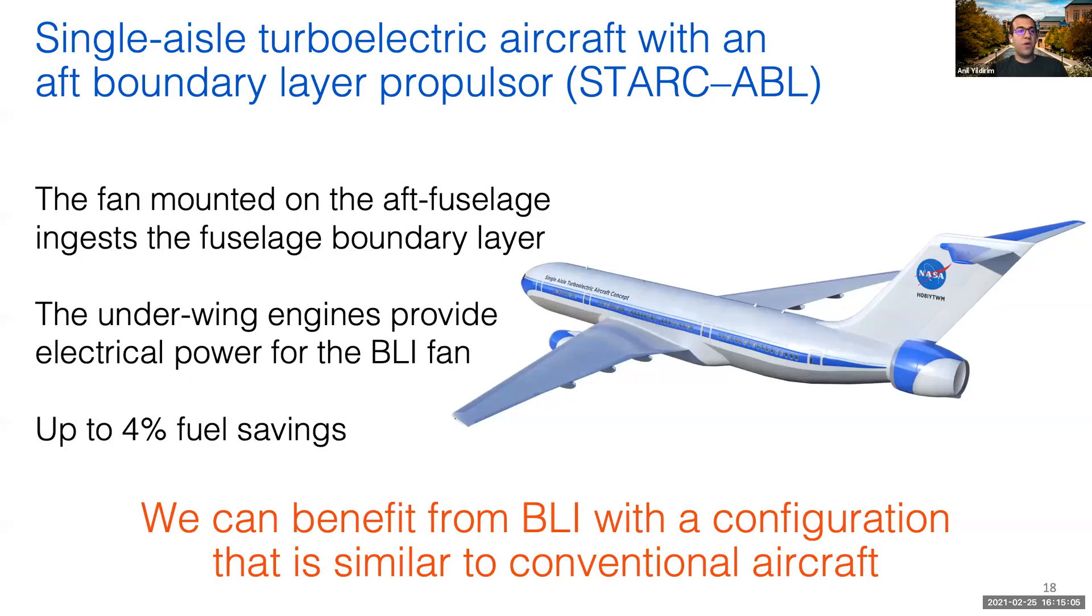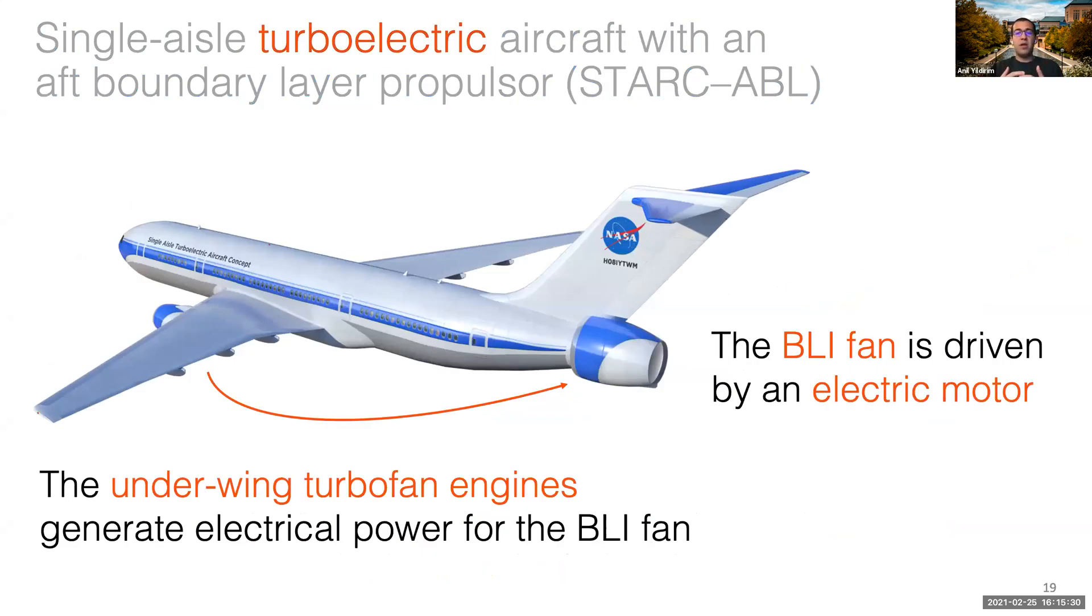That's why we've been focusing on the STARC-ABL concept developed by NASA. As you can see, it is very similar to a conventional aircraft that you would see in airports today, except for the fan on the rear fuselage. The STARC-ABL concept uses this fan to ingest the boundary layer generated by the fuselage to obtain better aeropropulsive performance. To explain how the BLI system works here, this configuration has two traditional turbofan engines on the wings. Besides providing thrust, these engines also generate electricity. We use this electricity to drive the electric BLI fan that's located on the aft fuselage.